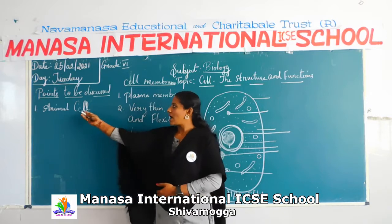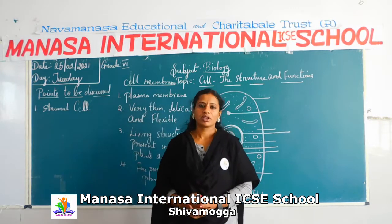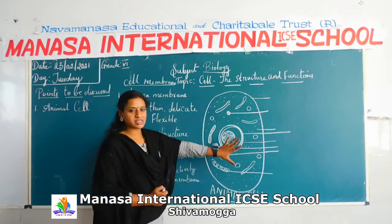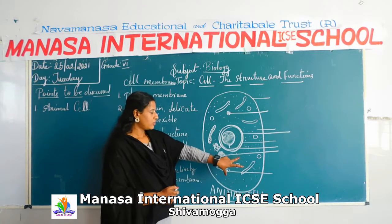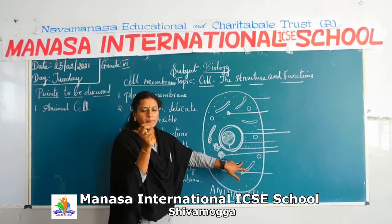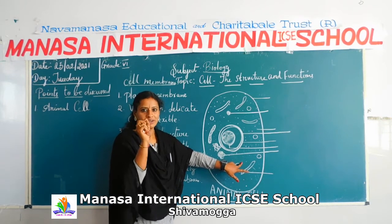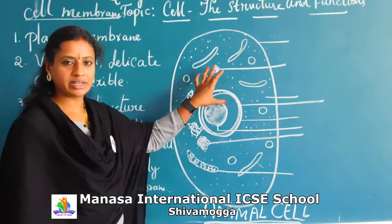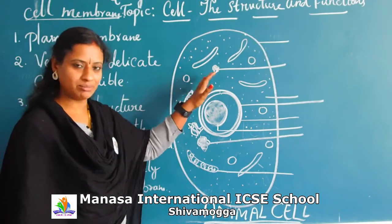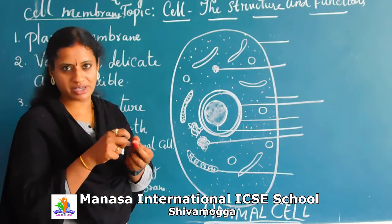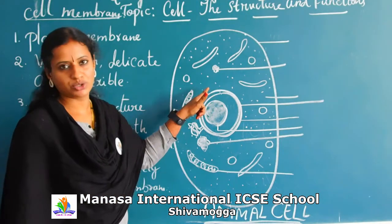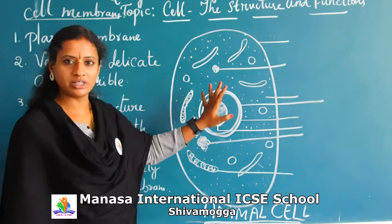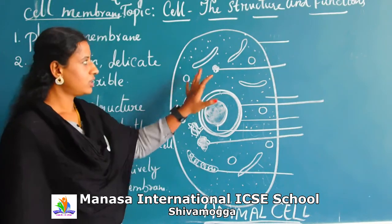In today's class let us discuss about the animal cell. This is a pictorial picture of the animal cell. This is the complete structure of the animal cell. If you take any of your skin and place it under a microscope and observe, this is all the internal cell organelles you will find.